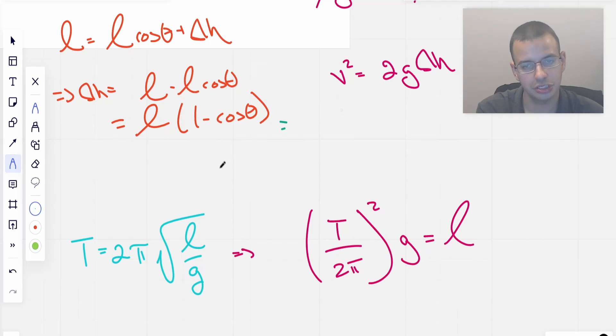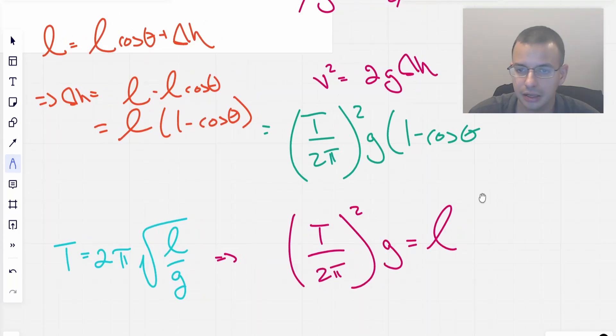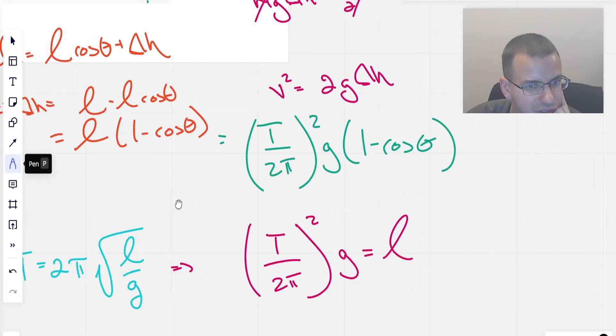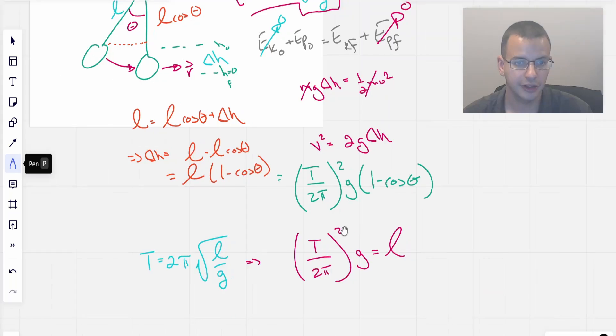So then I can say that this equals, I'm going to kind of mosey down a little bit for more space. So this is more space, T over 2 pi squared G, 1 minus cosine of theta equals, put that back, 1 minus cosine theta. Is that true? Maybe true. So yes, because that part right there is L. All right.